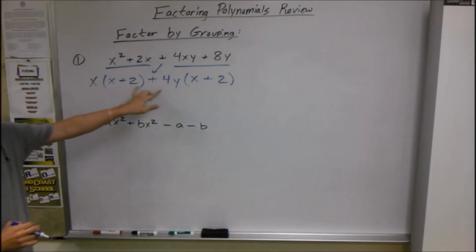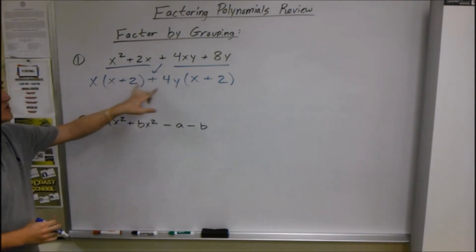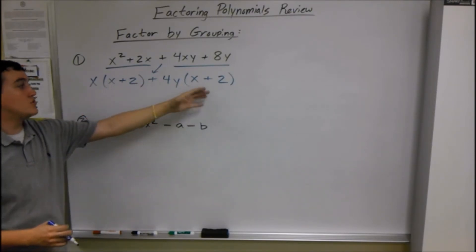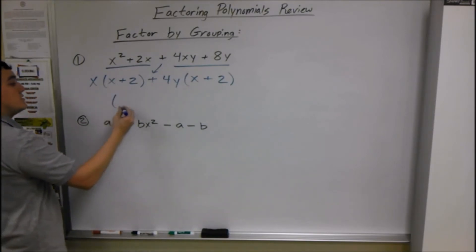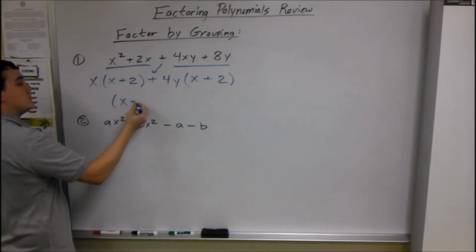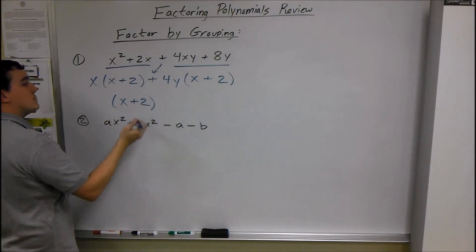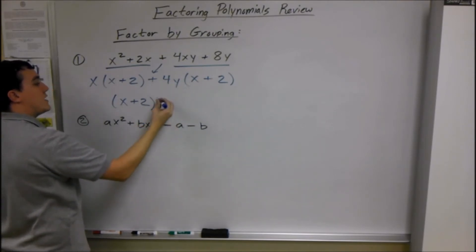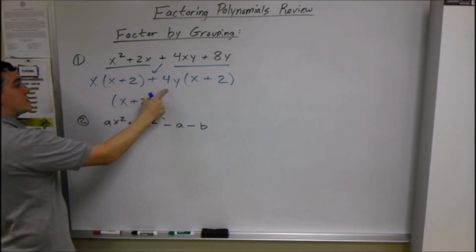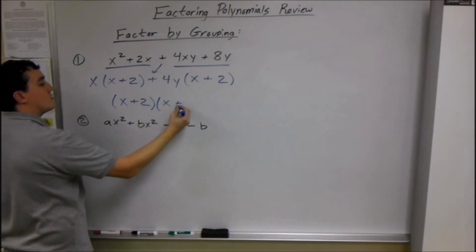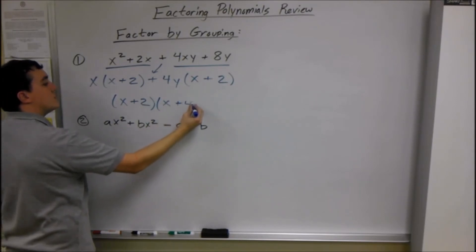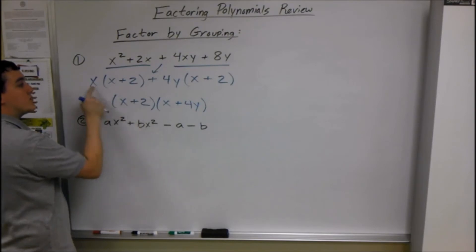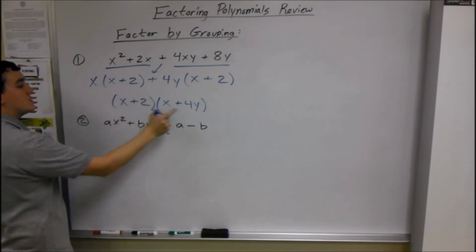Now these are both terms — what do these two terms have in common? They both have an (x + 2), so we can factor out (x + 2). What's left on the outside? x and 4y go in the other parenthesis. So whatever's on the inside goes in one factor, and whatever's on the outside goes in the other: (x + 2)(x + 4y).